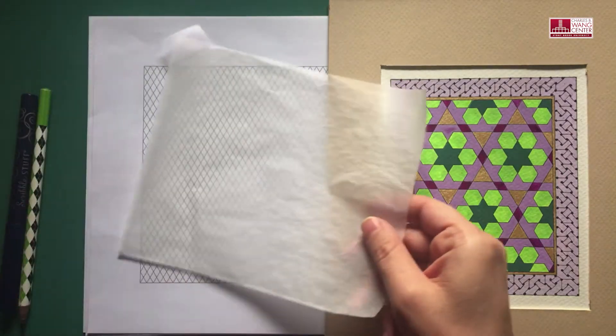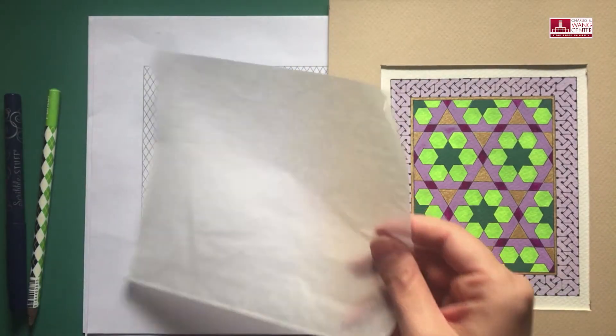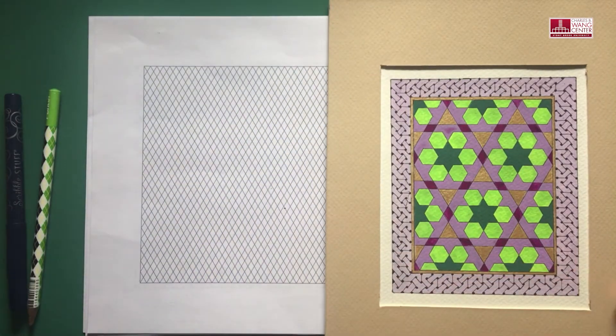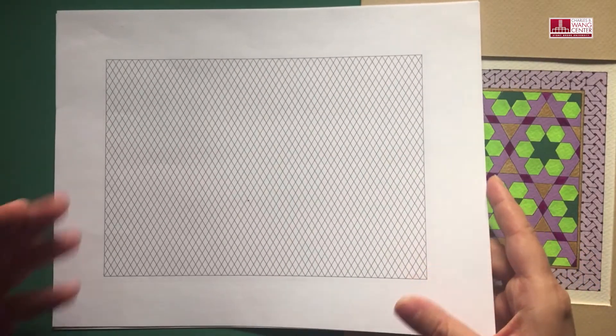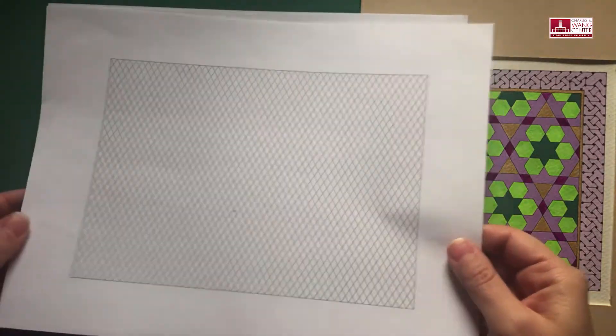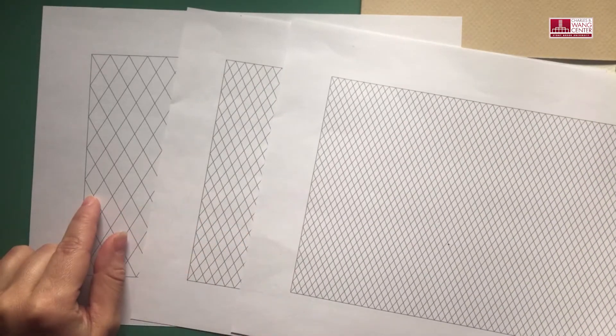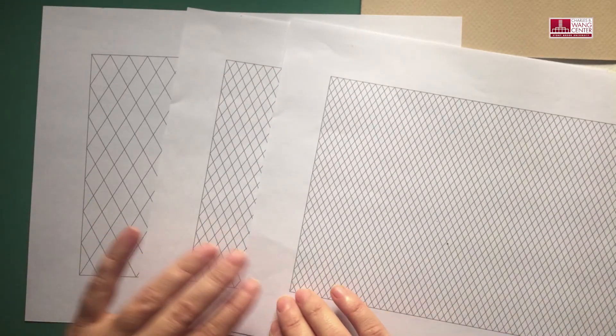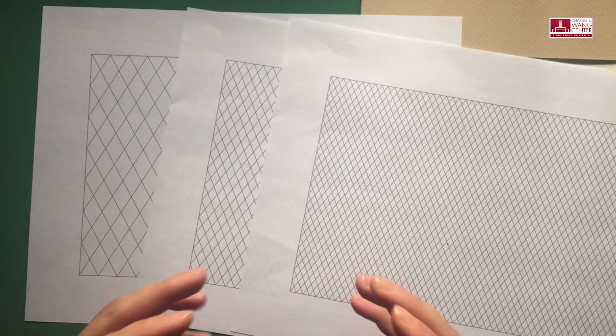tape, also you will need to print out one of these sheets which have been sent to you in the links provided in the website. These sheets are isometric grids in three different scales. Depending on which scale you are starting from, you will end up with different sizes of pattern.